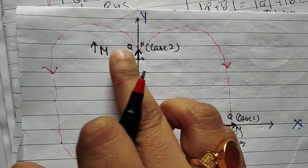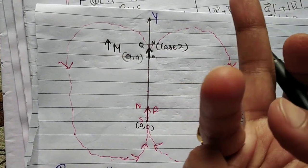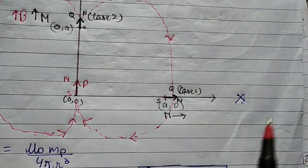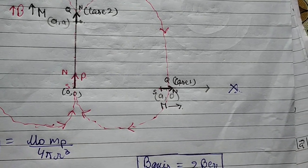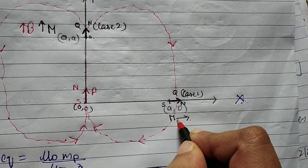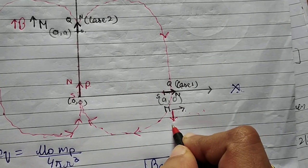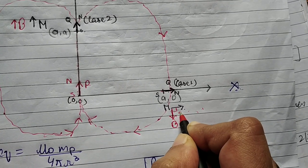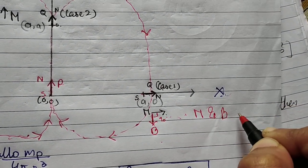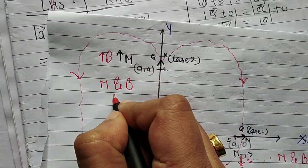Now let's see: if this magnetic moment is M, the magnetic field arises in the same direction. Because the magnetic moment is here, the field lines generated here give us M and B at 90 degrees in this arrangement.